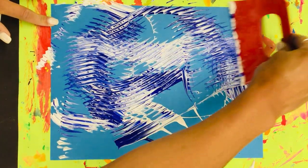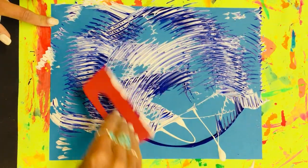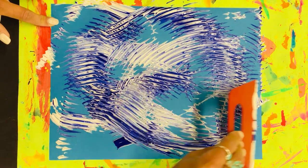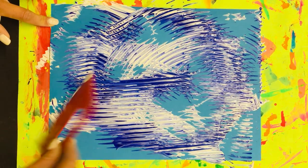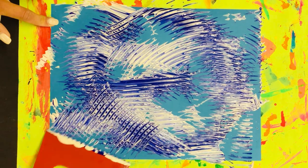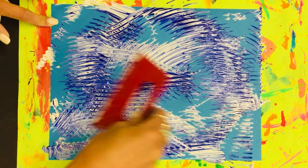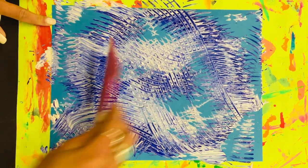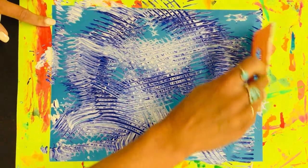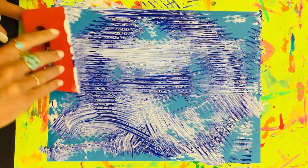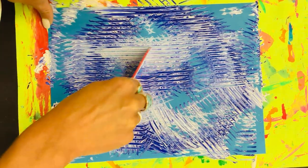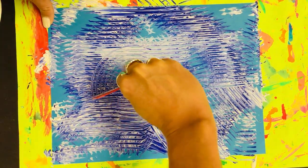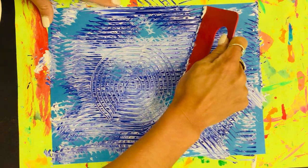And you're just gonna do different designs, whatever you feel looks cool, whatever is most fun for you to create. Just make sure you get right to the edge because this is gonna represent the water where our lily pads are gonna grow and where our frog gets to hang out. So you can do straight lines with this paint scraper, you can actually twist it and make circles, you can do zigzags, whatever you want.